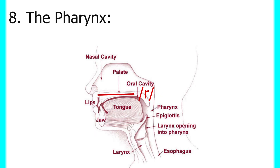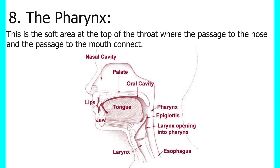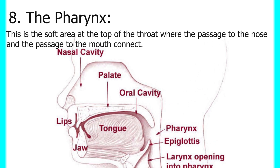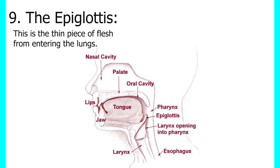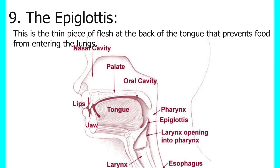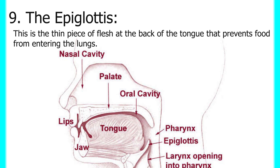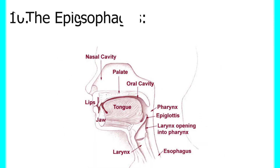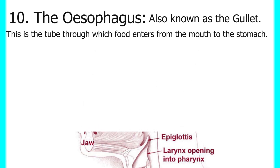Next we have the pharynx — the soft area at the top of the throat where the passage to the nose and the passage to the mouth connect. It is located between the uvula and the larynx. Next we have the epiglottis, a thin piece of flesh at the back of the tongue that prevents food from entering the lungs. We also have the esophagus, also called the gullet — the tube through which food passes from the mouth to the stomach.